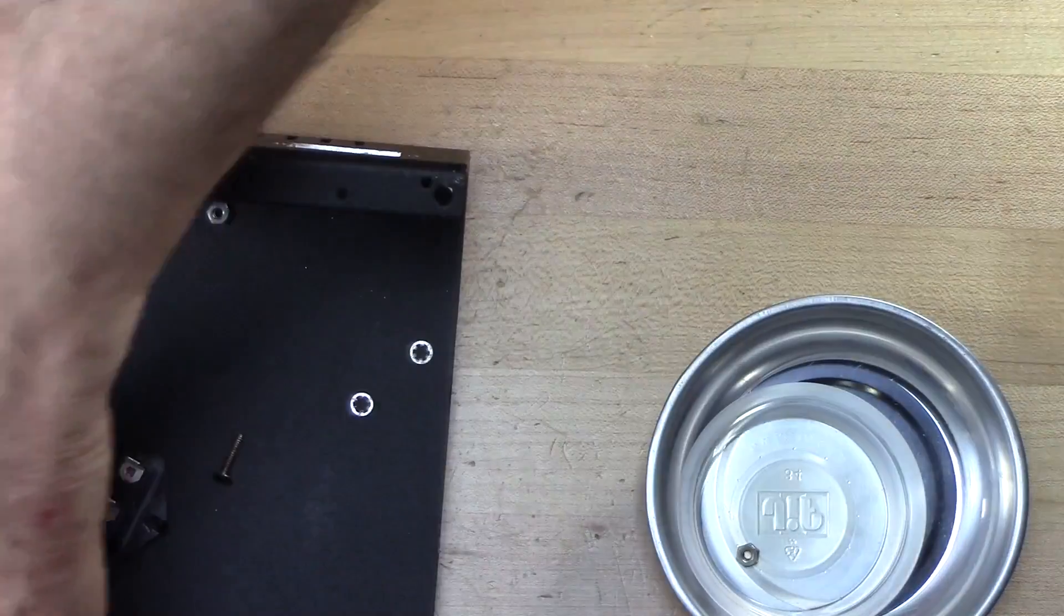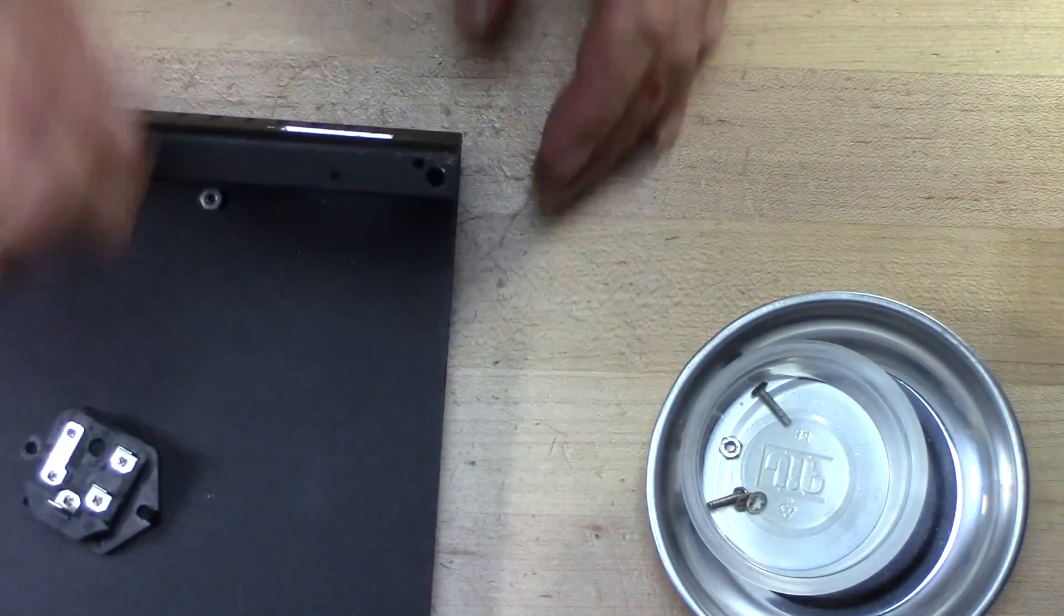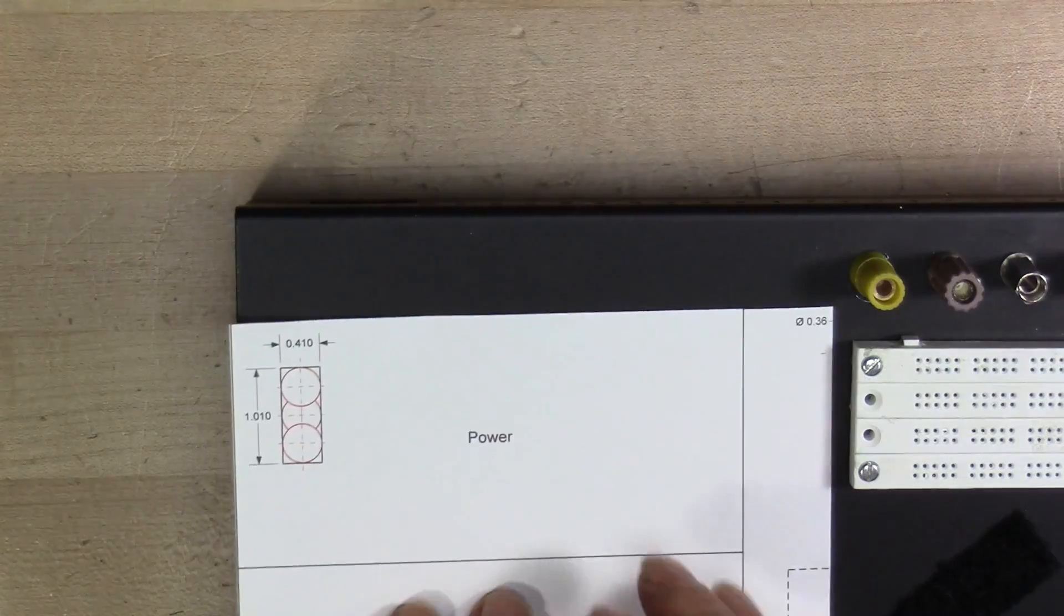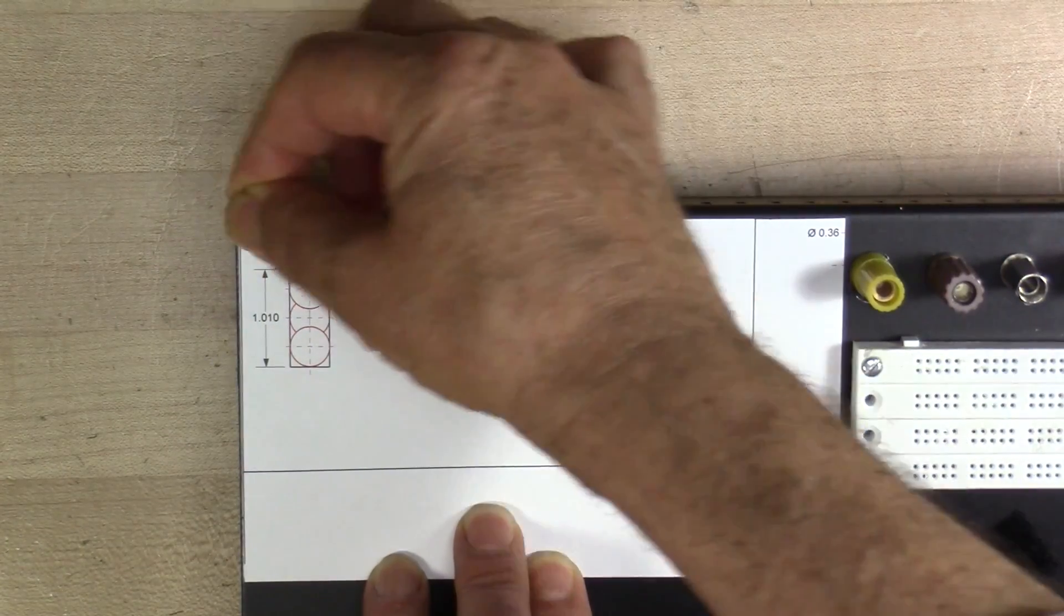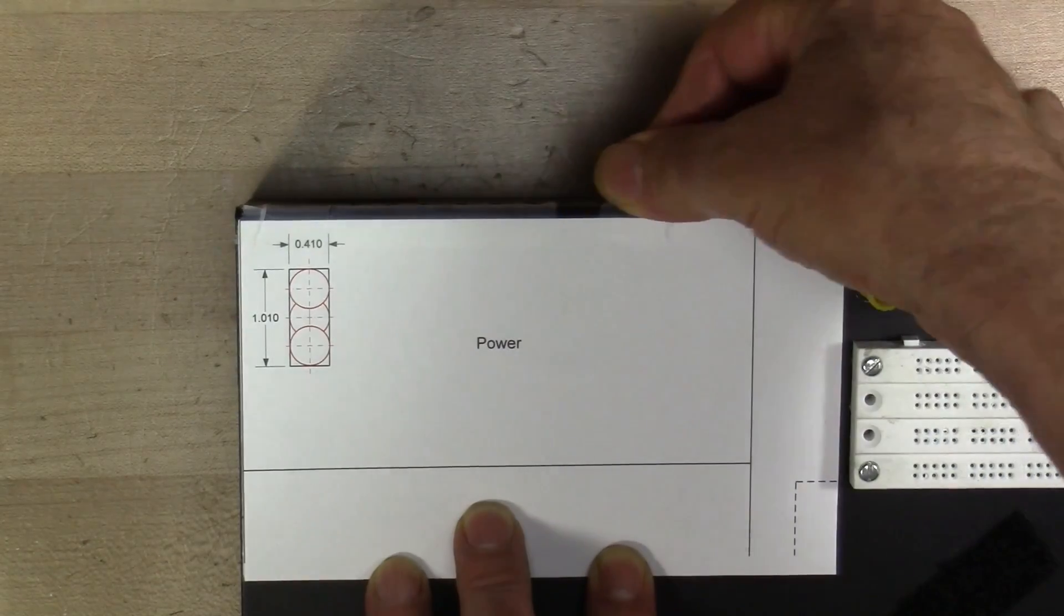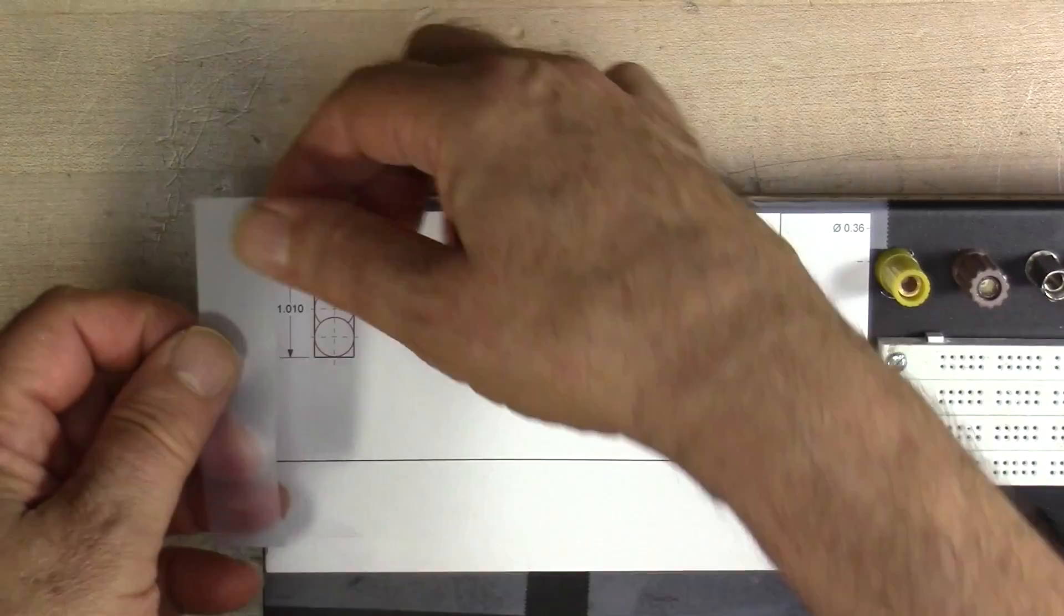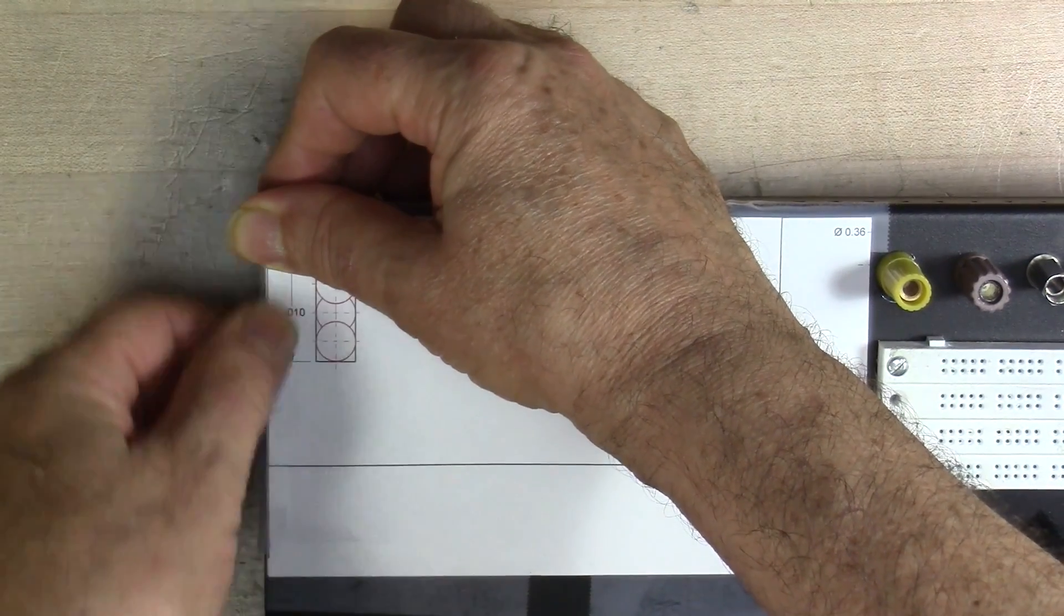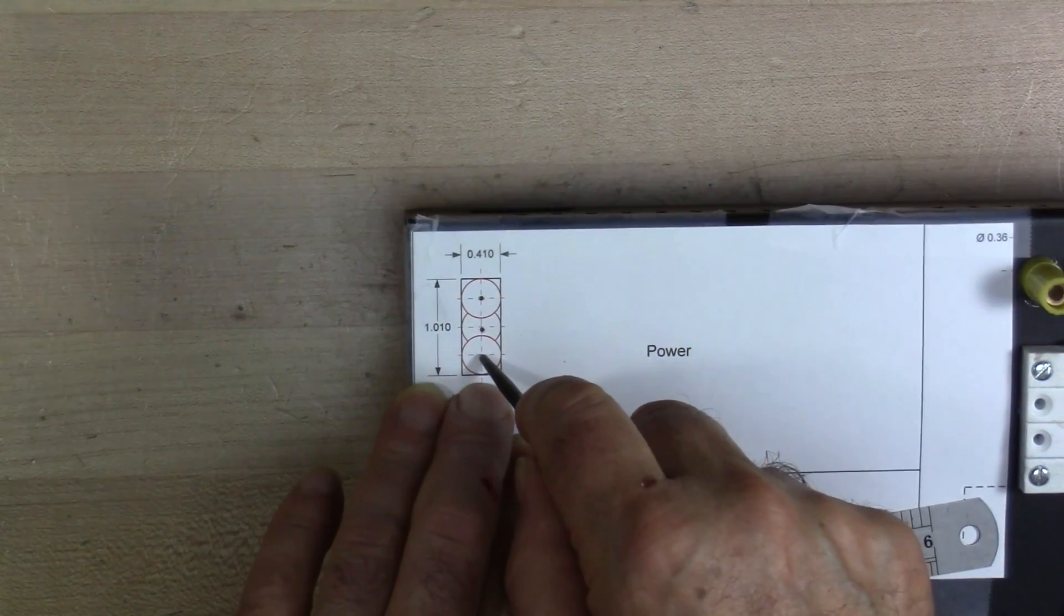This magnetic tray is quite useful in keeping things in place. Now I have a template that I'm taping down to the top panel, and this time it's relatively simple, just a rectangle that's going to be used to press fit the power switch. I'm using an automatic center punch to punch the centers of the three holes used to drill out most of the material.